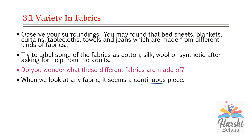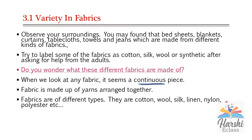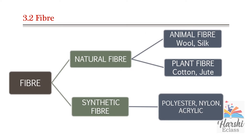We know that the fabric looks like a continuous piece, but actually it is not. Fabric is made up of fine, thin strand-like structures arranged together in a pattern so that the fabric looks like a continuous piece. Those thin thread-like structures are called yarn.